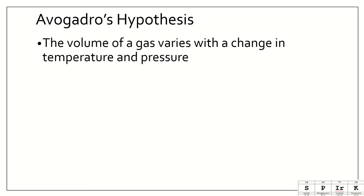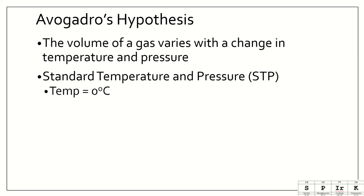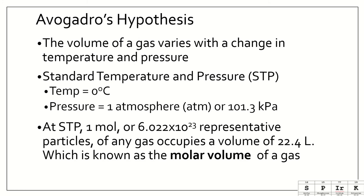The volume of a gas varies with change in temperature and pressure. We have something called standard temperature and pressure, or STP. The standard temperature is 0 degrees Celsius. The standard pressure is 1 atmosphere, or 101.3 kilopascals. At STP, 1 mole, or 6.022 times 10 to the 23rd representative particles of any gas, occupies a volume of 22.4 liters, which is known as the molar volume of a gas.